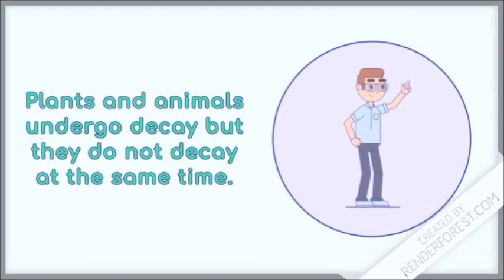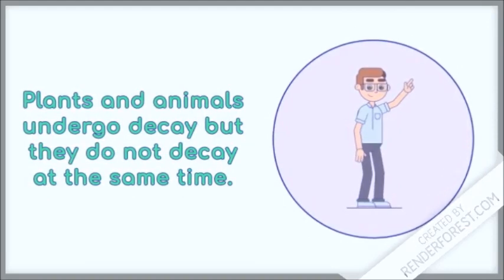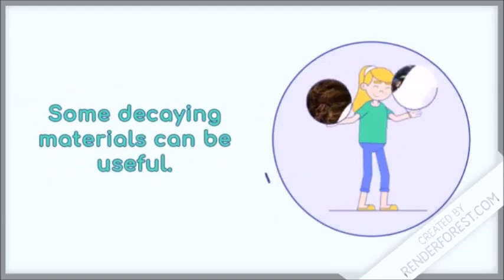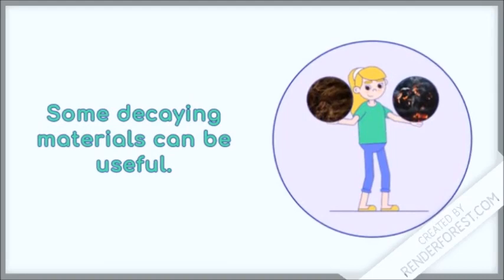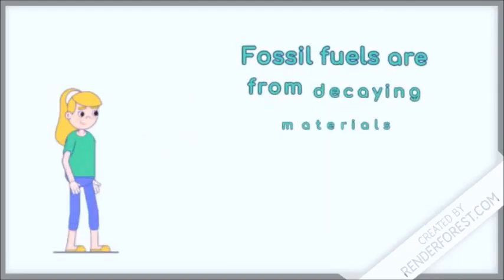Plants and animals undergo decay, but they do not decay at the same time. Our food products are good examples. Some decaying materials can be used, such as our fossil fuels and organic fertilizers.